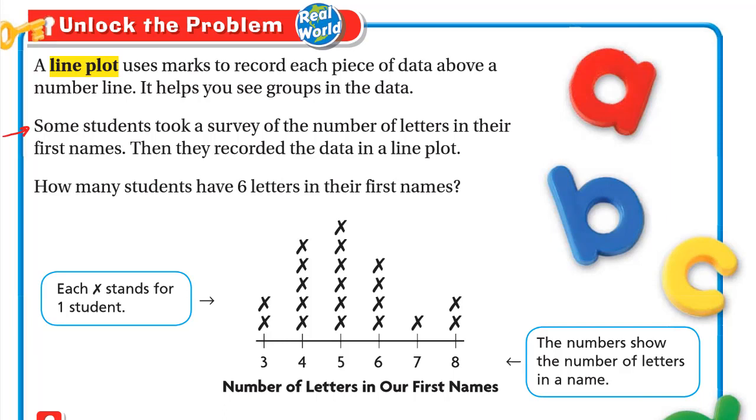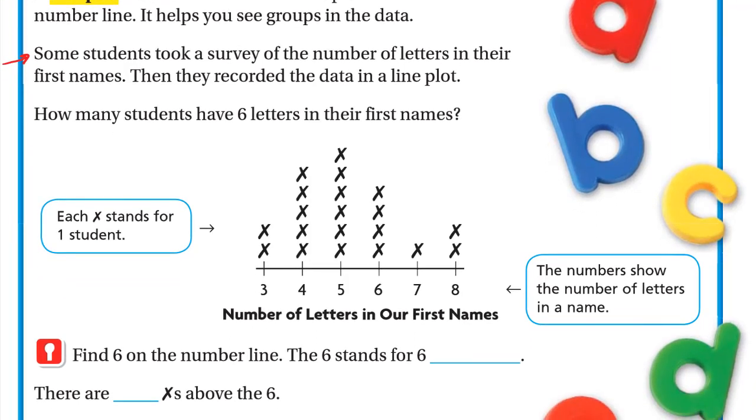Some students took a survey of the number of letters in their first names, then they recorded the data in a line plot. How many students have six letters in their first names? As you can see here, each X stands for one student. If you count the number of X's above the three, it means that the student has three letters in his name. The numbers here show the number of letters in a name. For example, students with three letters in their name have two X's, which means there are two students.